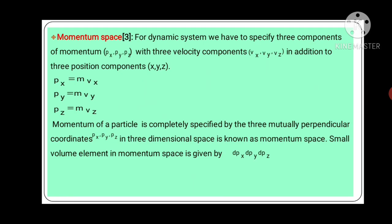Now, what is momentum space? If the system is dynamic, the particles have velocities, so they have momentum. For a dynamic system, we have to specify three components of momentum px, py, pz with three velocity components vx, vy, vz in addition to three position components x, y, z.